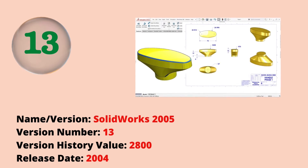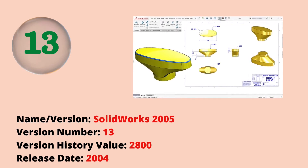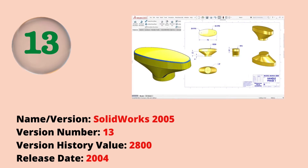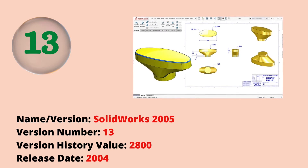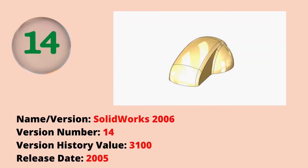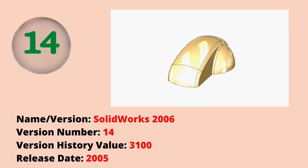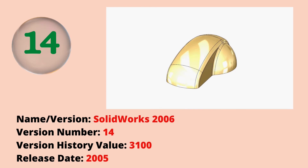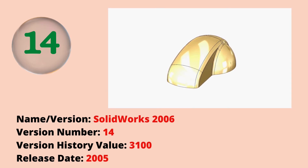The thirteenth version was SOLIDWORKS 2005 with a version history value of 2800. The release date was 2004. The fourteenth version was SOLIDWORKS 2006 with a version history value of 3100. The release date was 2005.